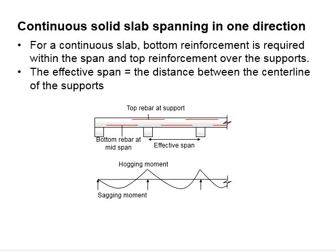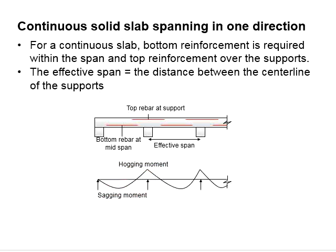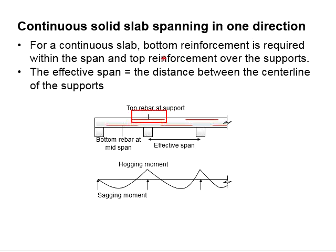For the continuous slab, due to the existence of the sagging and hogging moment along the span, the bottom reinforcement bars are normally provided at the mid-span while the top reinforcement bars are normally provided over the support.